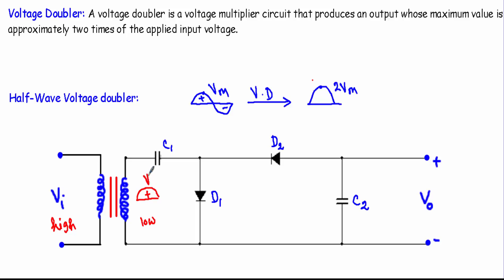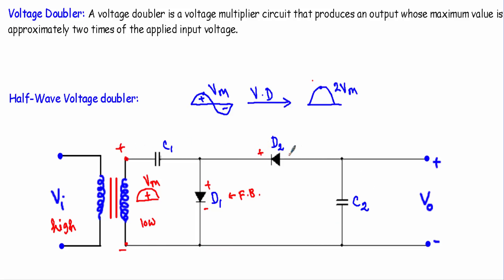During the positive half cycle, the alternating quantity will have a maximum value of Vm. This terminal will be positive and this terminal will be negative. The positive terminal is connected with the P side of diode D1 and the negative terminal is connected with the N side of D1, so D1 is in forward bias. When a diode is in forward bias and treated as ideal, I replace it with a short circuit; with the approximate model I replace it with a 0.7V voltage source. The positive terminal is connected with the N side of D2 and the negative terminal with the P side of D2, so D2 is in reverse bias — I replace D2 with an open circuit.